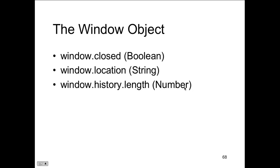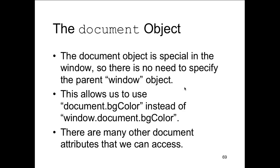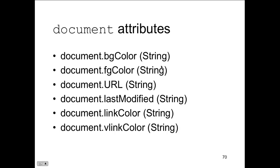We have the document object model, which is why it's called the document object model. It's a model of objects for the web browser to interpret. It includes window.close, window.location, history, length — examples of using window. We can use document the same way, running methods or looking for attributes associated with each one of the object components.